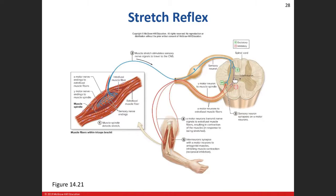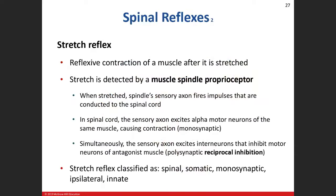That whole concept of stimulating one muscle group while inhibiting the other is called reciprocal inhibition. An interneuron - which is either excitatory or inhibitory - inhibits the alpha motor neuron going to the biceps brachii. So we can contract the triceps without the biceps working against it. The stretch reflex is classified as: spinal (no brain involvement), somatic (skeletal muscle), monosynaptic, ipsilateral (same side), and innate.